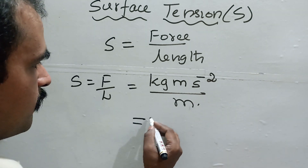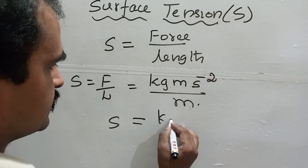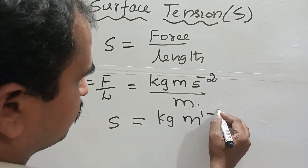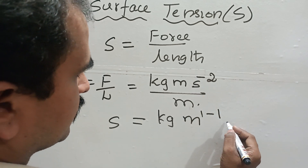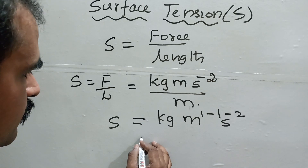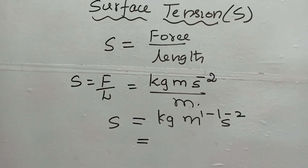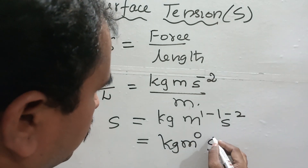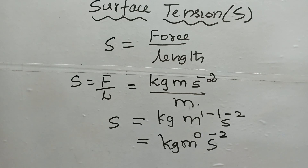Now let me simplify this formula. S is equal to kg, and for the meter terms: m to the power 1 minus 1, and s to the power minus 2. So you are getting kg·m to the power 0·s to the power minus 2.